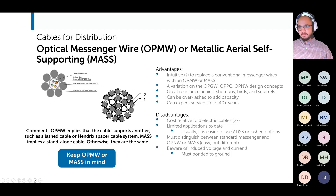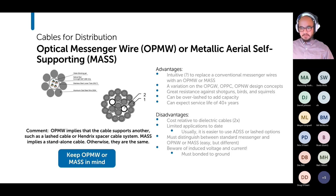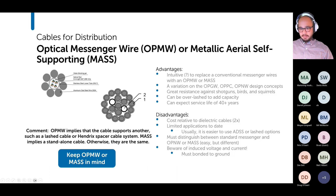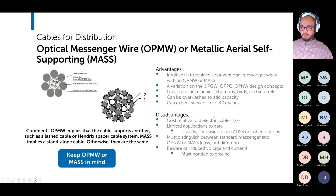Optical messenger wire — like the other cables, it makes sense to replace a static wire with an optical wire. It's a variation of the OPGW, OPNW, and OPPC designs. Being metal, it has resistance to shotguns, birds, and squirrels, and it can be over-lashed to add high capacity while also carrying communication. It's much more expensive than dielectric cables, and in most cases it's easier to use ADSS or lash to existing messenger wire. You also need to distinguish this optical messenger wire from existing messenger or neutral wire, and if you're lashing armor cable you have to be aware of induced voltage and current and bond it to ground.